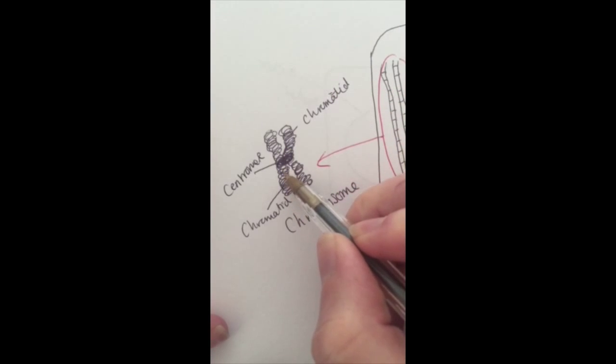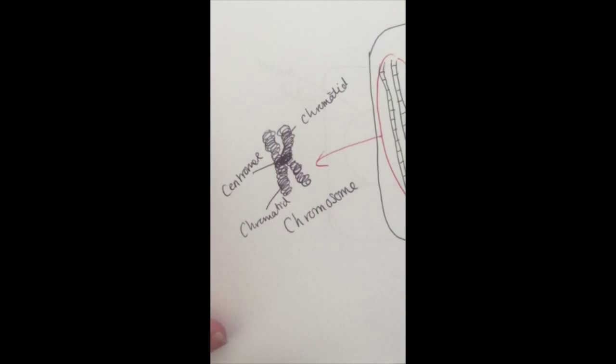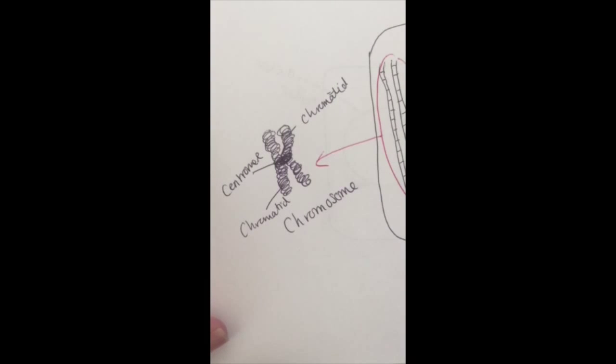Now, as this one is identical to this one, we say that they are sister chromatids. But it's important to remember that this chromosome is made up of one strand of DNA which is identical to the other strand of DNA. And that's really, really important.